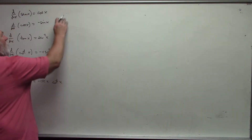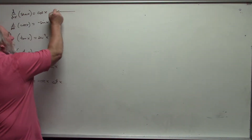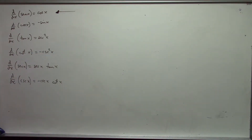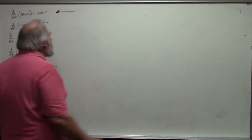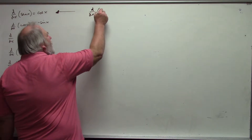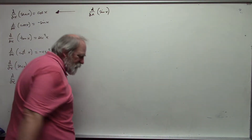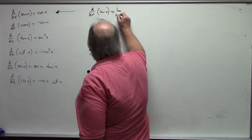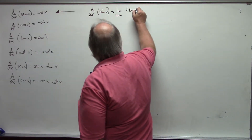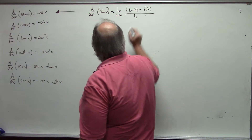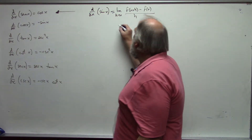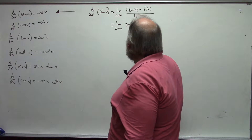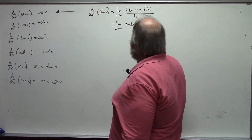Now I will show how the first derivative occurs — why we get that. I'll talk about the others after that. The derivative of sine of x: going back to our definition. The definition of the derivative is the limit as h approaches 0 of f(x+h) minus f(x), all divided by h. In this case my function is sine, so this becomes the limit of sine(x+h) minus sine(x), all divided by h.